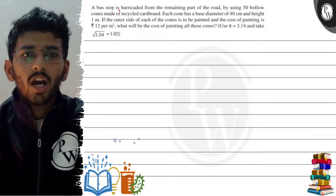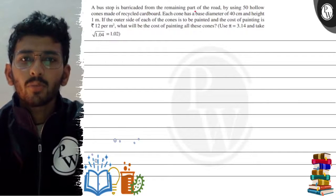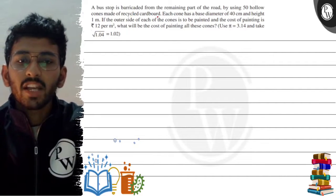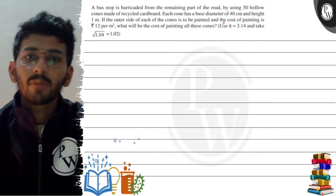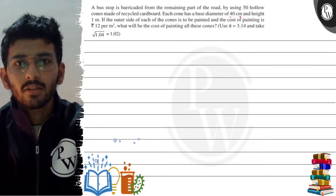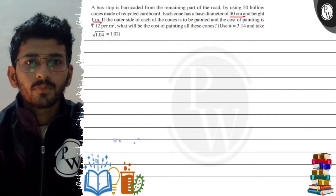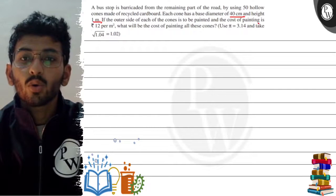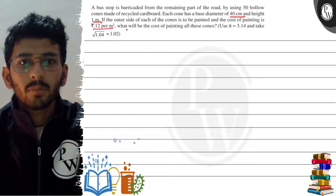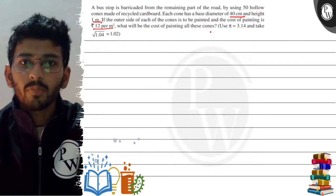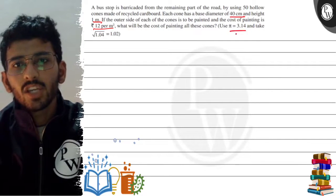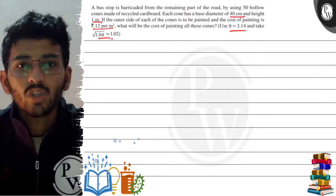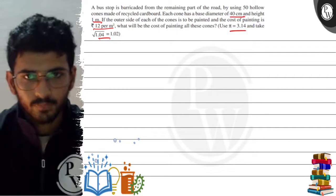Hello watchers, let us read the question. A bus stop is barricaded from the remaining part of the road by using 50 hollow cones made up of recycled cardboard. Each cone has a base diameter of 40 cm and height of 1 meter. If the outer side of each cone is to be painted and the cost of painting is 12 rupees per meter square, what will be the cost of painting all these cones? The value of pi is given, and if it comes to the root of 1.04, it comes to the value of 1.02.